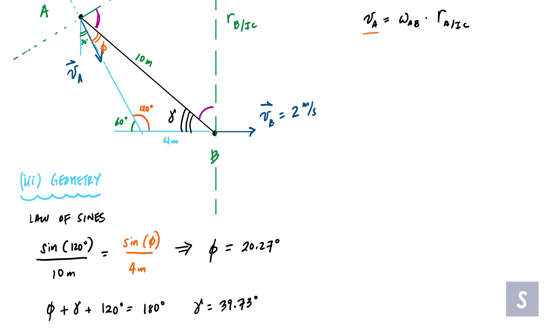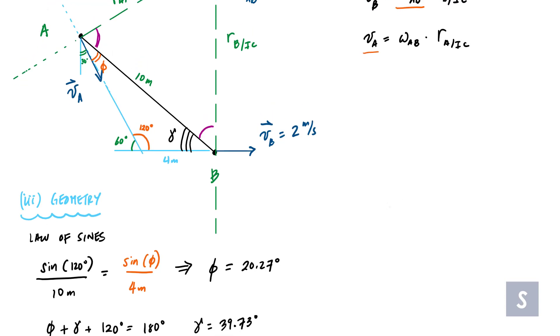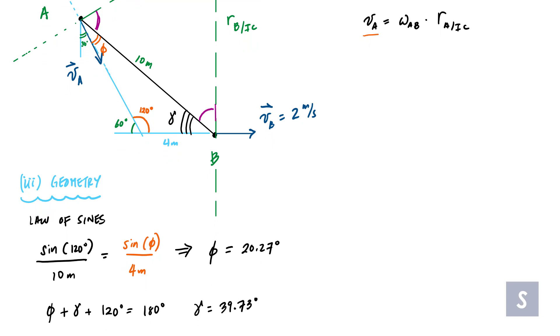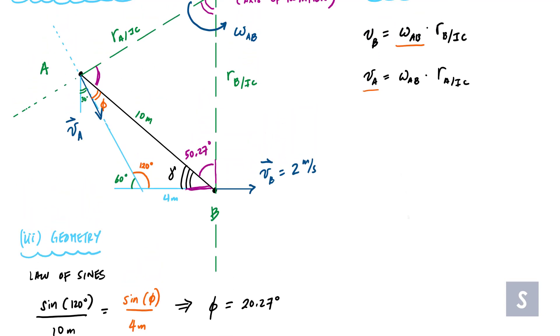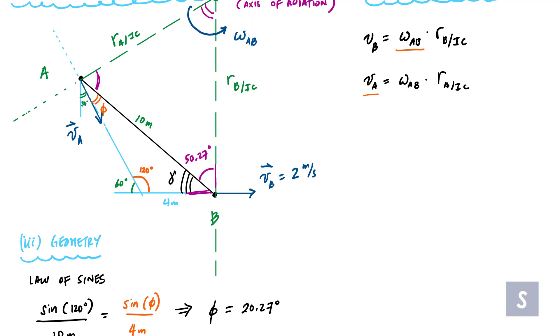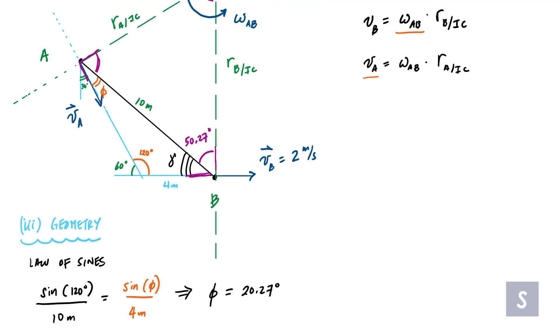Okay, so I'm getting closer here. And if gamma right there is 39.73 degrees, well, I can look at this right here. This should be 90. And so 90 minus 39.73 is 50.27 degrees there. And what else do I know? All snap right here. I know that this right here is 90. And I know phi is 20.27. So 90 minus 20.27 here. 90 minus 20.27 is 69.73 degrees.